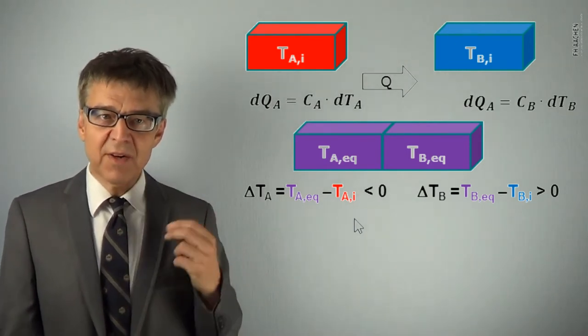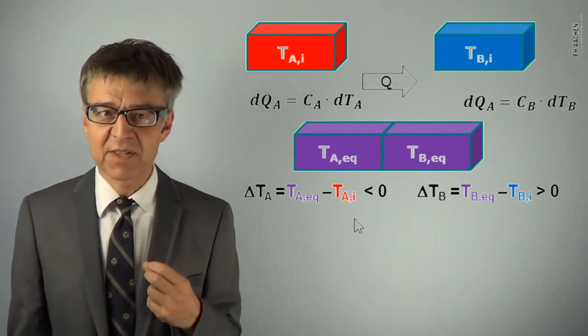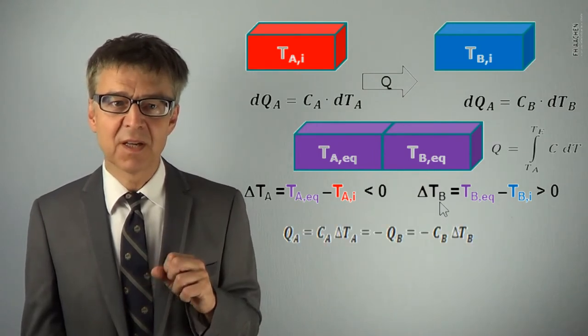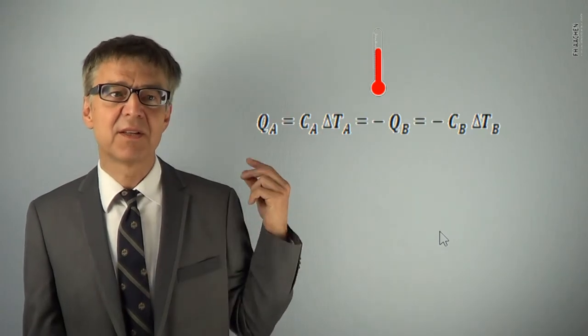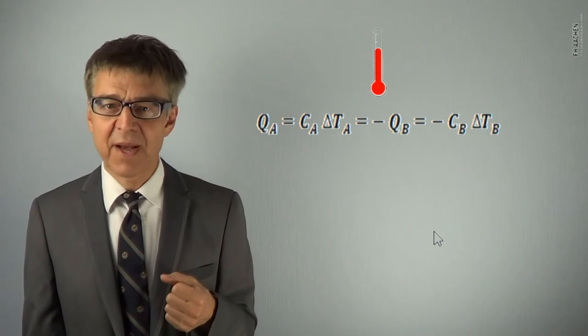If you calculate the heat from the temperature differences using heat capacity, you end up with this relationship, the fundamental equation of calorimetry. From temperature measurements, we can calculate amounts of heat or determine heat capacities.